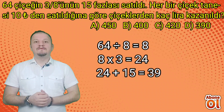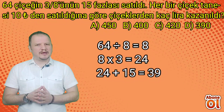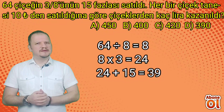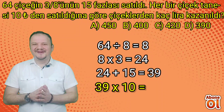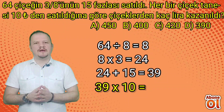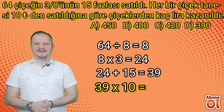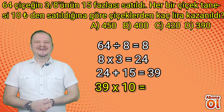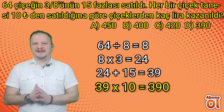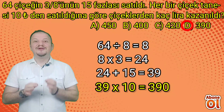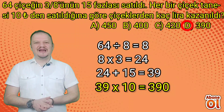Bir çiçek 10 liraya satılmış; 39 ile 10'u çarpıyoruz. 39'u yazıp 10'daki sıfırı ekliyoruz: cevap 390 liradır. Doğru seçenek D seçeneğidir.